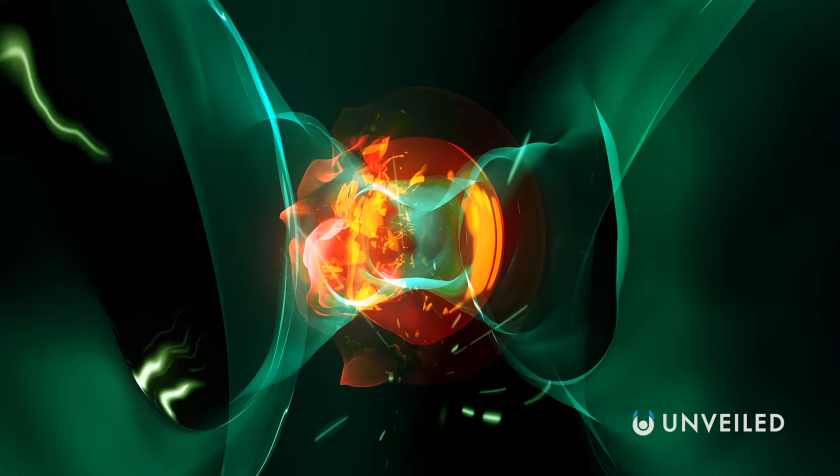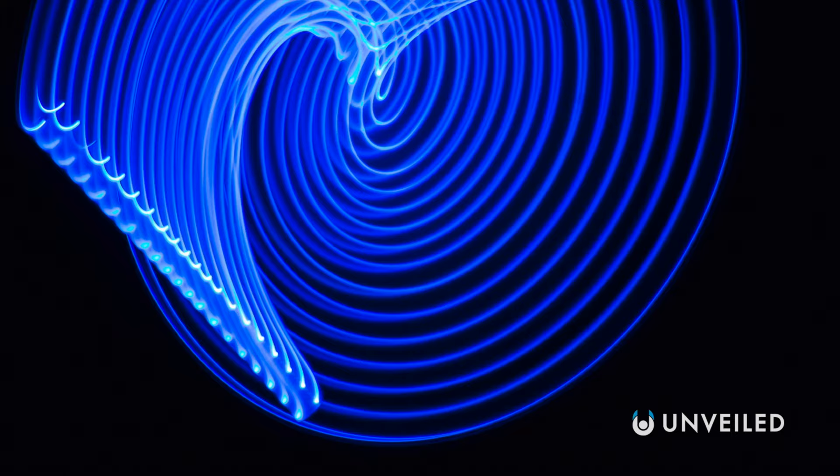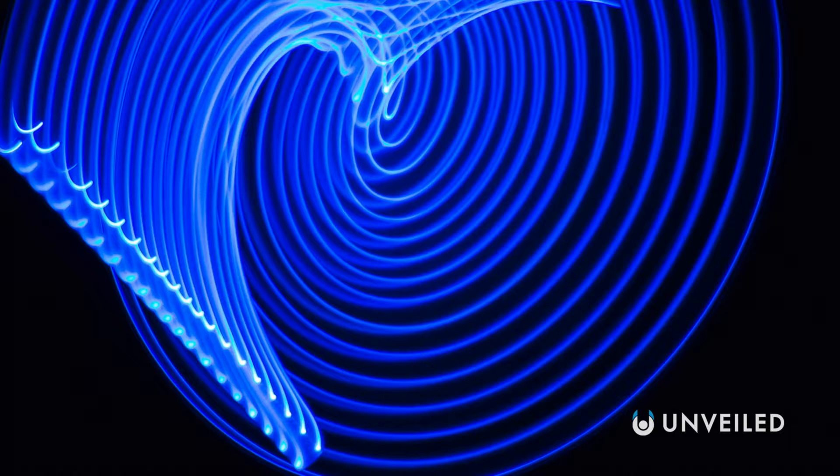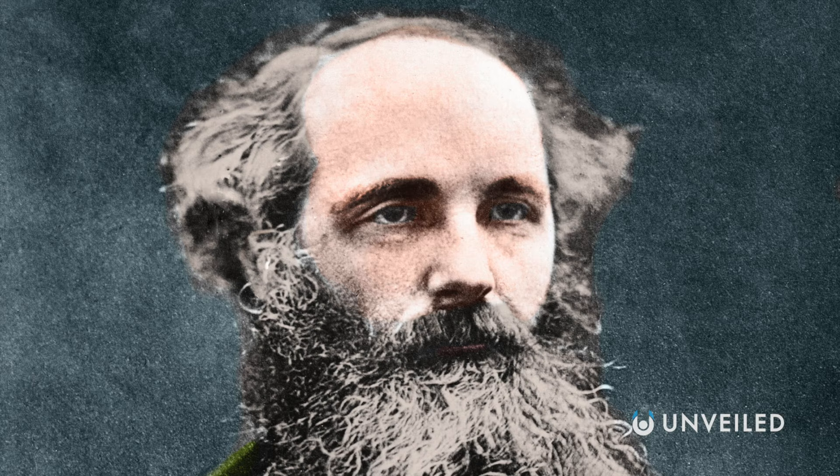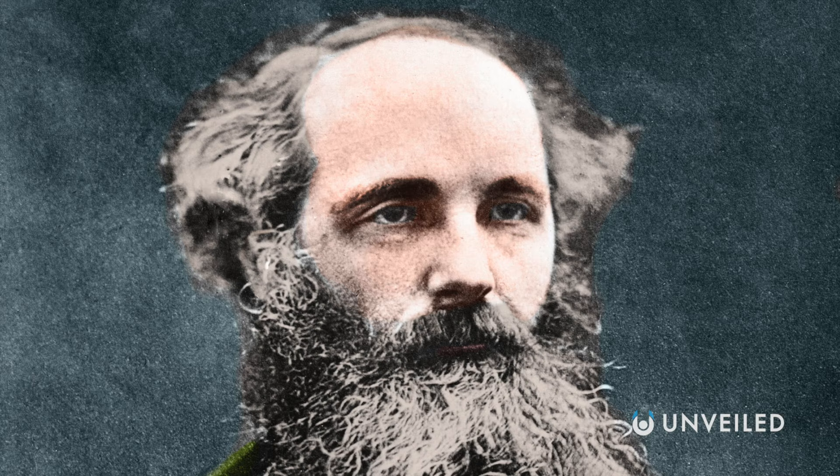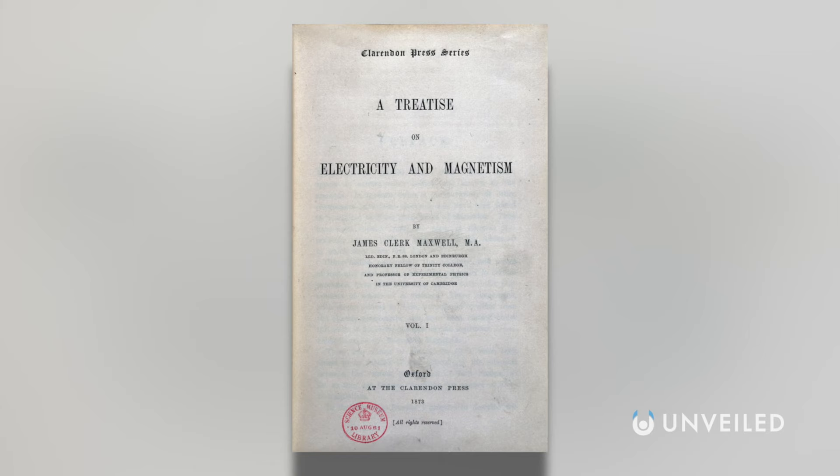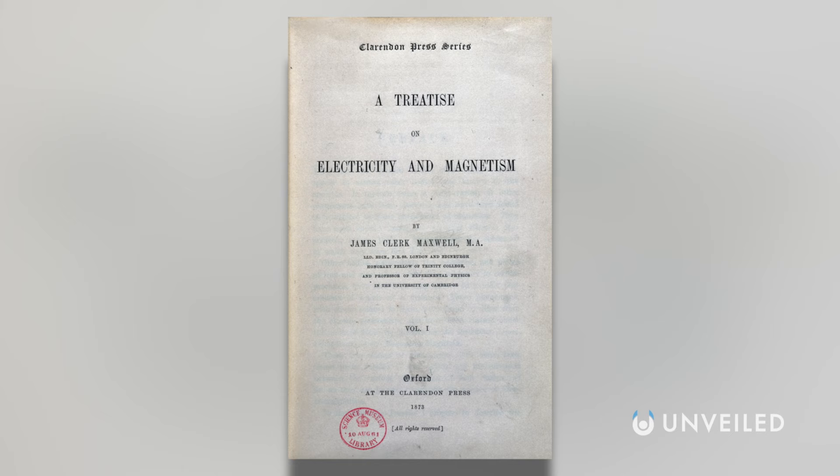Although, surprisingly, some pre-Einstein scientists had already proposed the existence of these waves. Originally, the concept was derived from the laws of electromagnetism. In the 1860s, James Clerk Maxwell formulated equations that formed the foundation of classical electromagnetism.